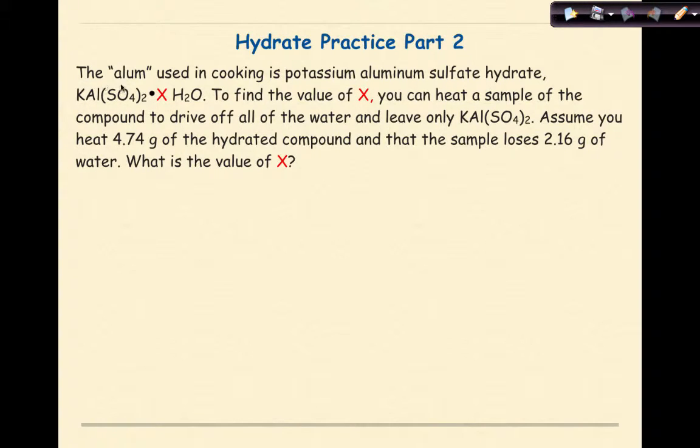Hydrate practice part 2. The alum used in cooking is potassium aluminum sulfate hydrate, KAl(SO4)2•X H2O. To find the value of X, you can heat a sample of the compound to drive off all the water and leave only KAl(SO4)2. Assume you heat 4.74 grams of the hydrated compound and that the sample loses 2.16 grams of water. What is the value of X?